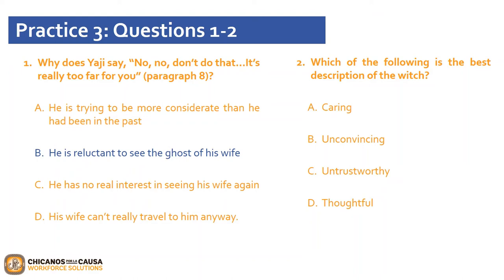Question 2 states: which of the following is the best description of the witch? Would it be A, caring? B, unconvincing? C, untrustworthy? Or D, thoughtful? If you chose C, untrustworthy, that is the correct answer. The witch is tricking Yashi. The witch has her own interest at heart when she pretends it is the wife requesting, as she says, 'Give this witch plenty of money.' Please pause the video and complete question 3. Click play when you are ready to continue.